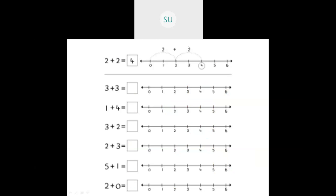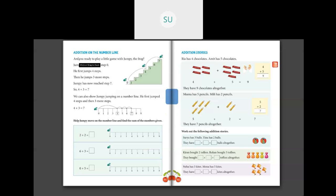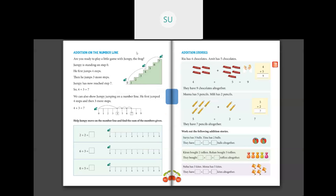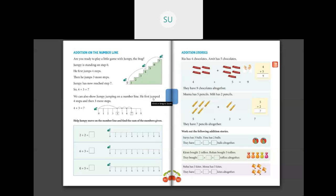We will see different problems given in your textbooks on page number 91. So addition on number line — are you ready to play a little game with Jumpy the Frog? Jumpy is standing on step 0. He first jumps 4 steps, then 3 more steps, and Jumpy has reached step 7. So 4 plus 3 equals 7. We can also show Jumpy jumping on a number line — first 4 steps, then 3 steps, so 4 plus 3 is 7.